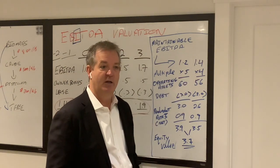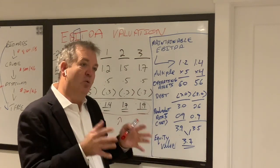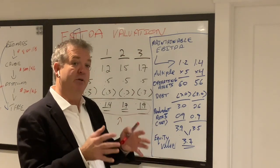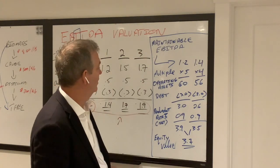The higher growth you have, the more your multiple is going to go because you're not accounting for the growth in your EBITDA number because your EBITDA is one number. It's a maintainable number. So you account for growth in the multiple.